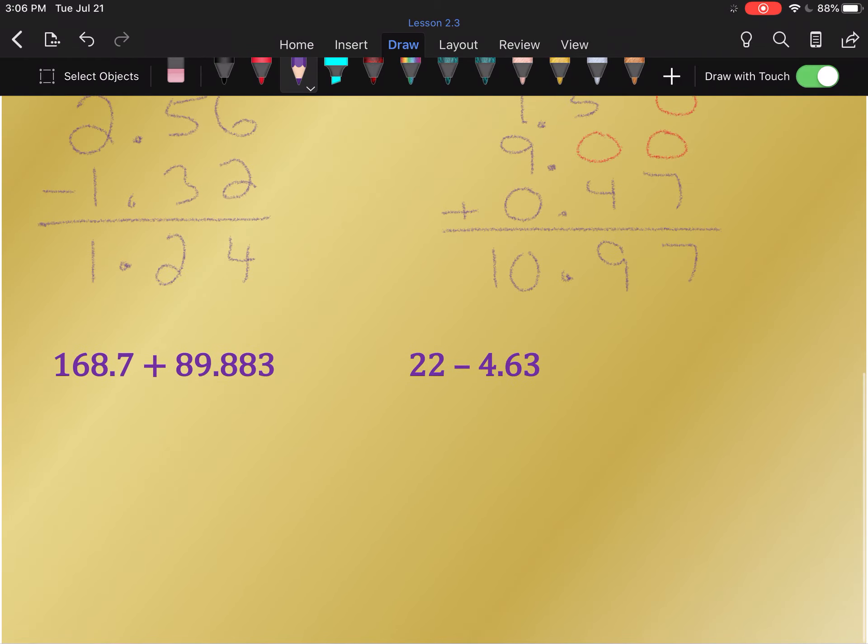Okay, line these up. 1, 6, 8, 0.7. 89.883. We're adding. I need to make these even, so I need to tack on a couple of zeros. No big deal.